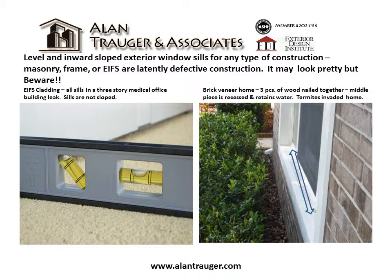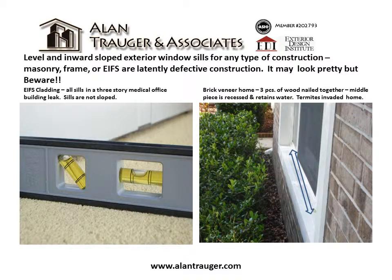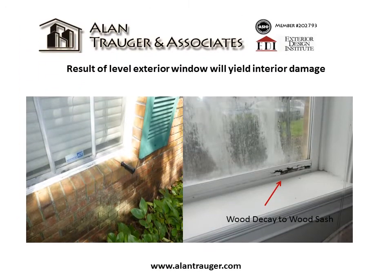Masonry, frame, or eaves are latently defective construction. It may look pretty, but beware. On the left is an eaves cladding where all the seals on a three-story medical office building leak — seals are not sloped. On the right is a brick veneer home where three pieces of wood nailed together with the middle piece recessed retains water. Termites have invaded the home. The result of level exterior window sills will yield interior damage.